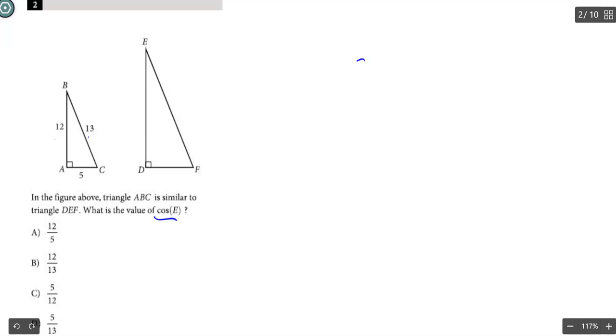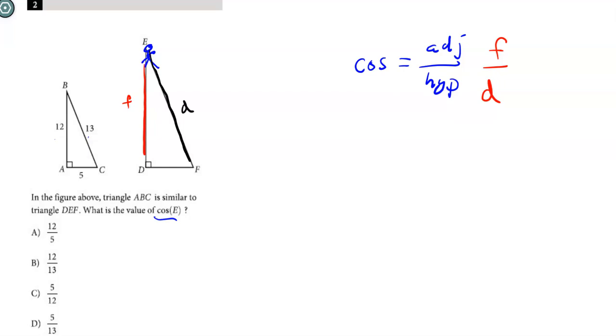So cosine is adjacent over hypotenuse. If I'm standing here on E, the cosine of E is going to be this leg, the leg next to me, which we'll call little f, over the hypotenuse, which we'll call little d. Since these two triangles are similar, it should be the exact same ratio as if I was standing on B. That ratio is going to be 12 over 13. So the correct answer here is going to be B.